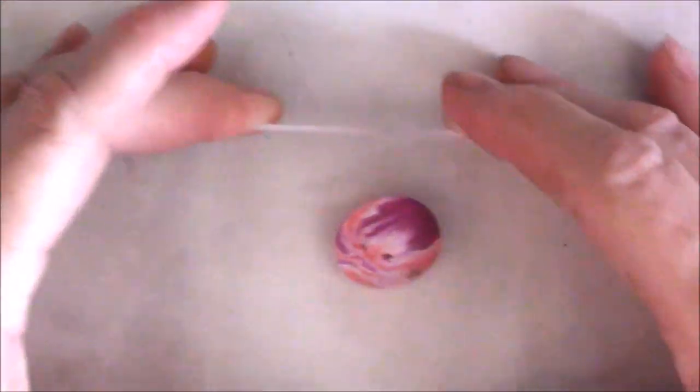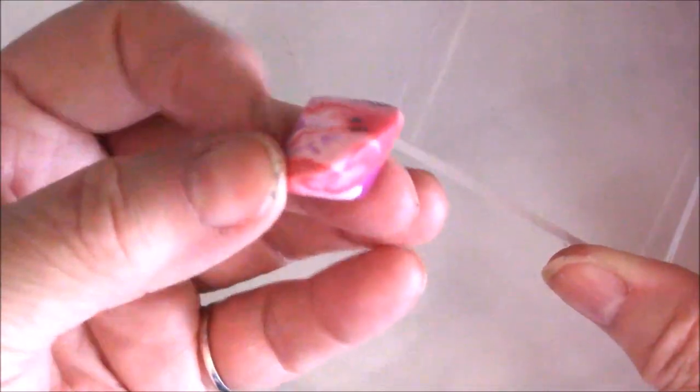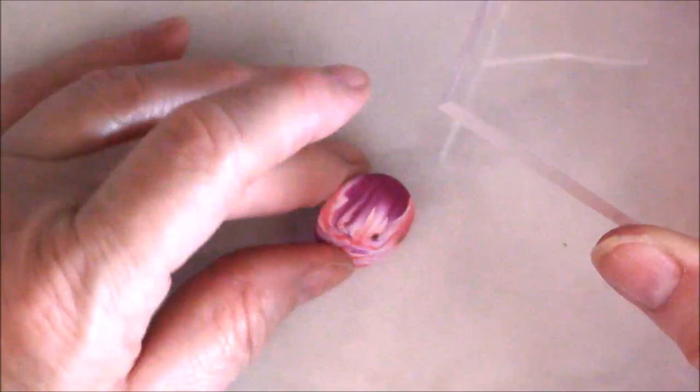I'm going to start rolling, just going around in a circle. You'll notice that it forms a pointed bicone shape. Let me get a few more.